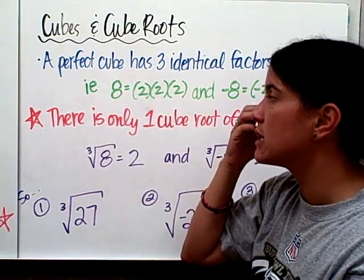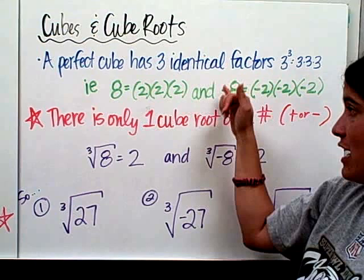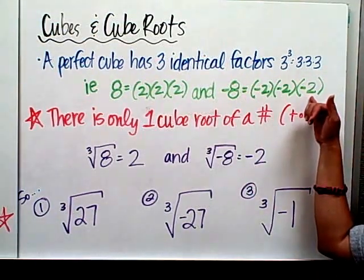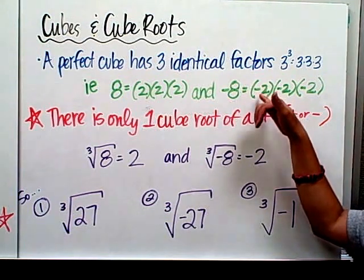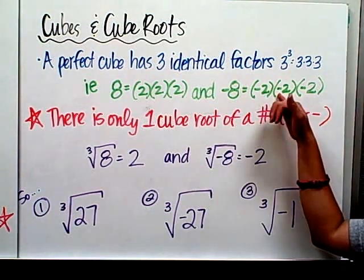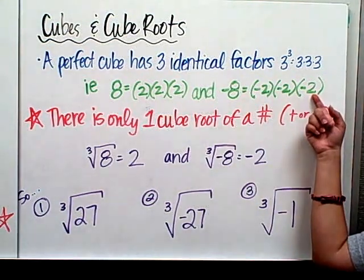So the cubed root of 8 is 2. And negative 8 is equal to negative 2 times negative 2 times negative 2. Negative 8 has the three identical factors of negative 2. Negative 2 times negative 2 is 4, and then 4 times negative 2 is negative 8.